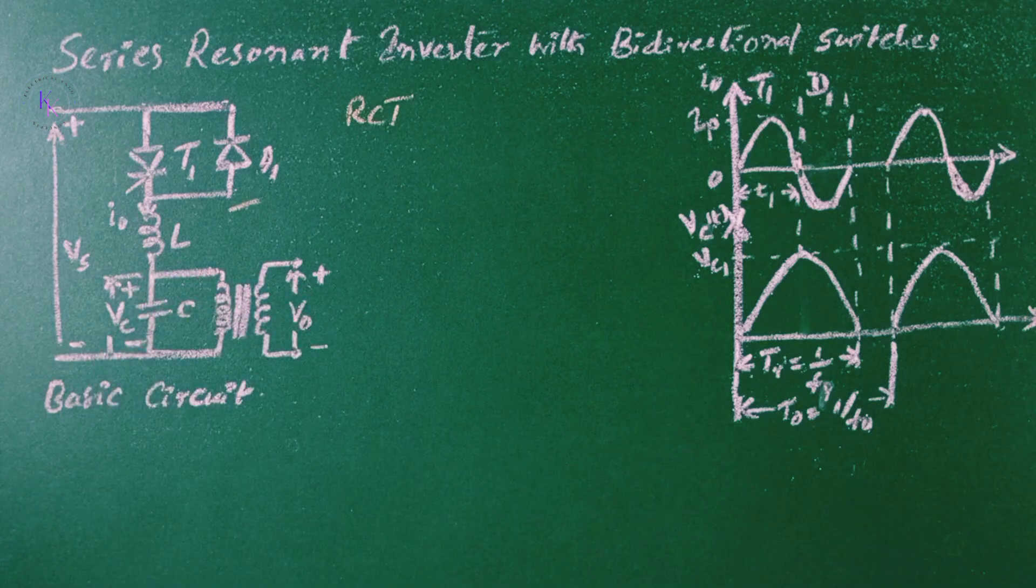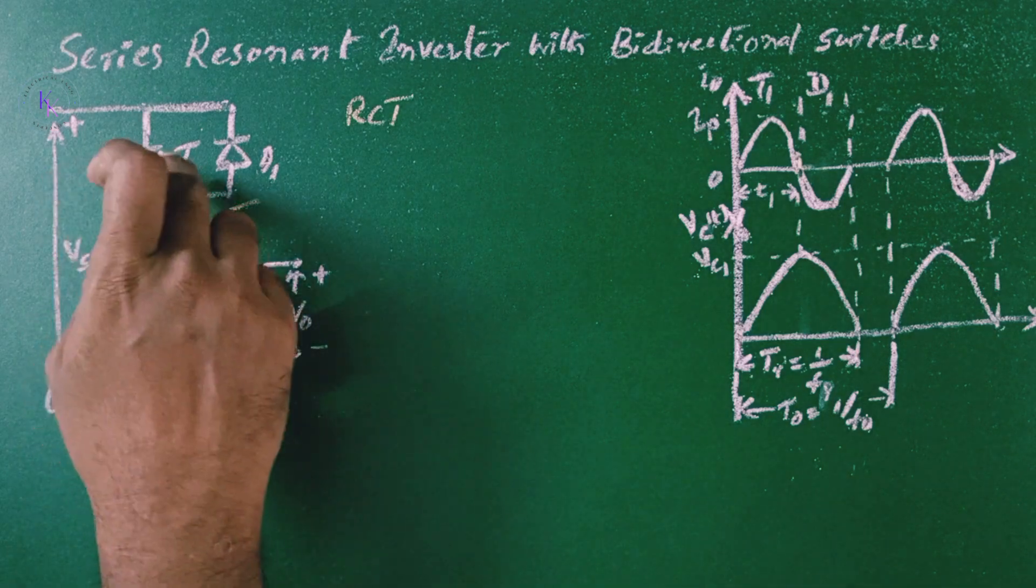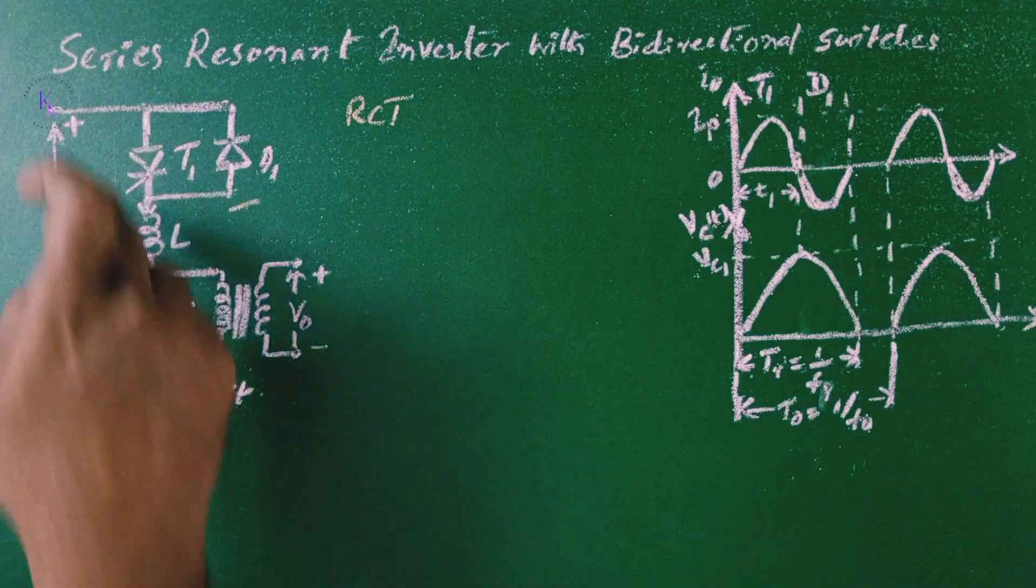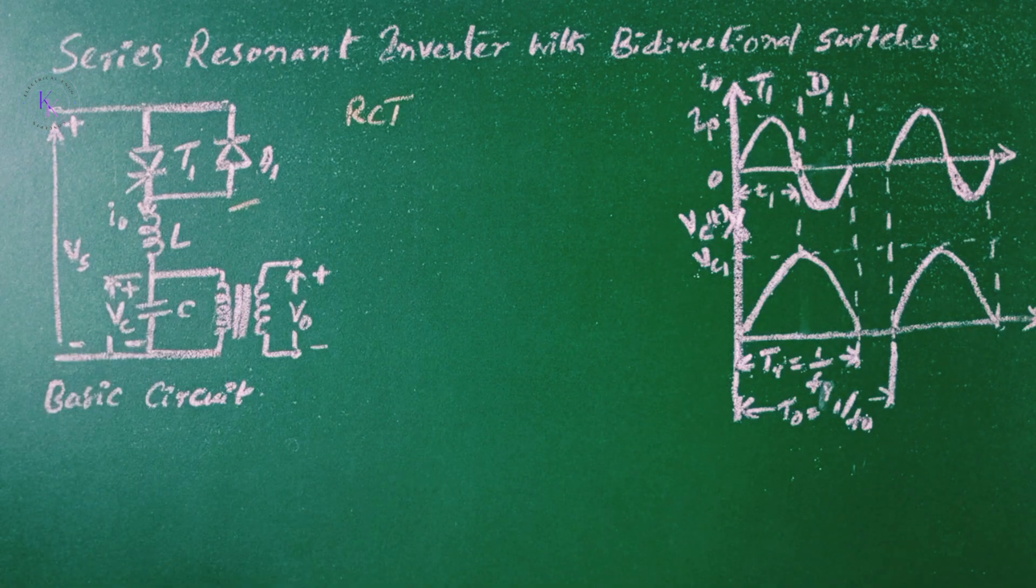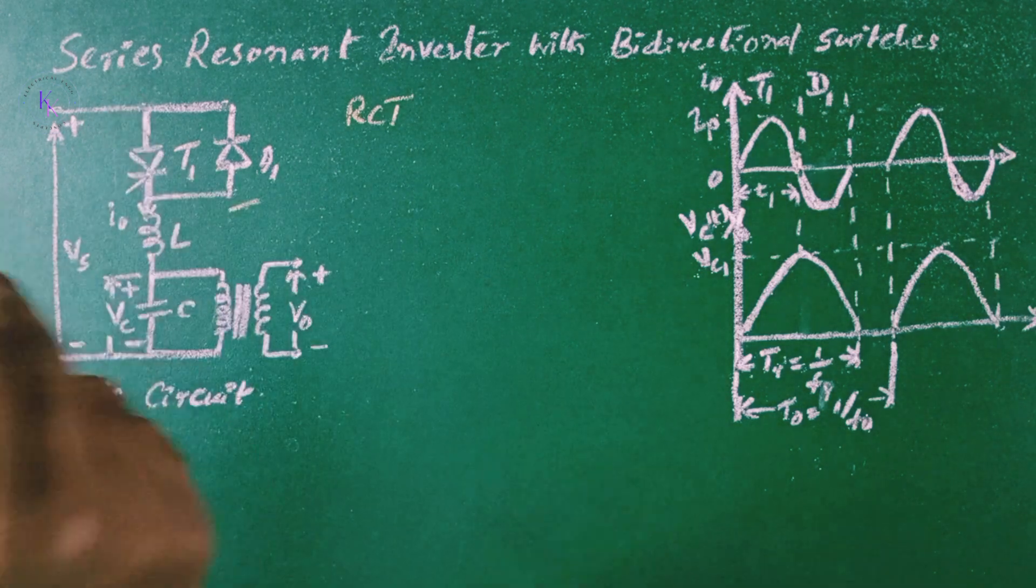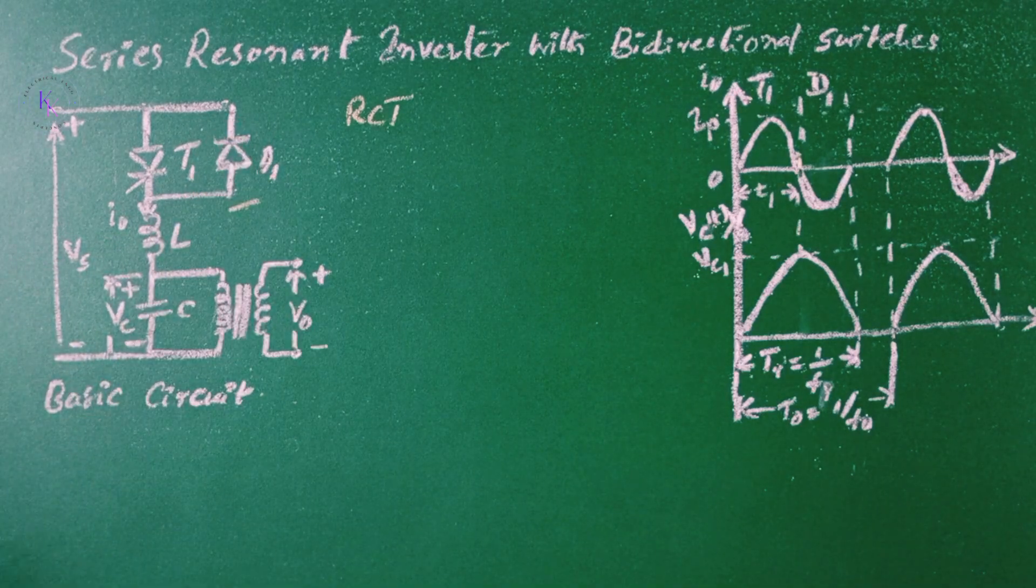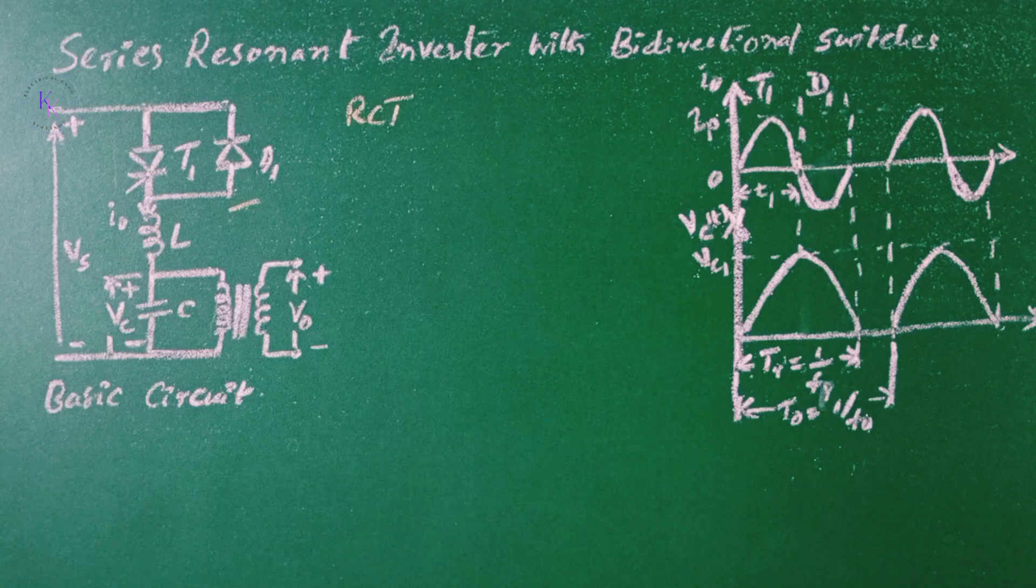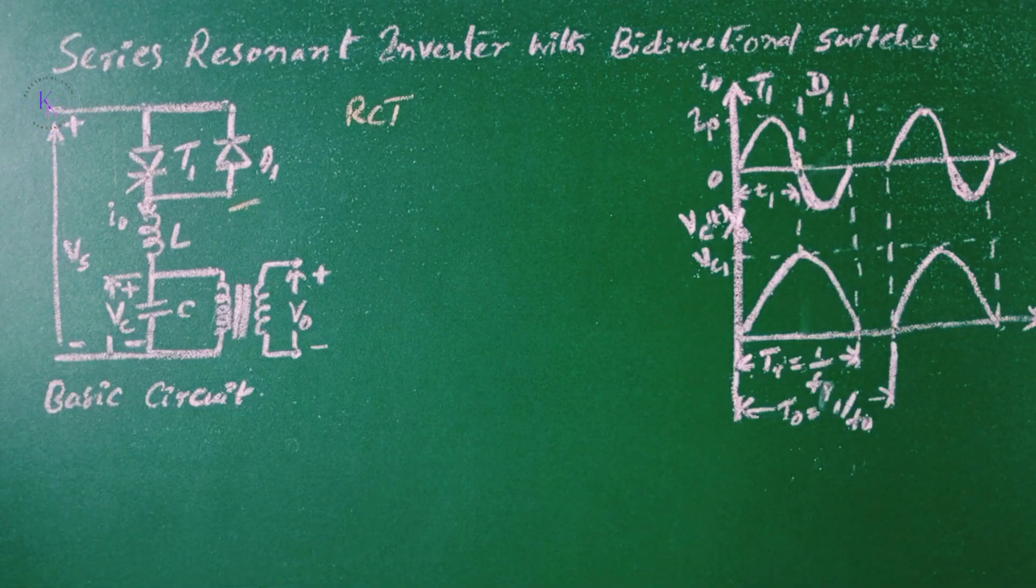Meanwhile, the capacitor C is going to charge up. When this voltage, cathode voltage of the thyristor T1, becomes more than the anode voltage, then the thyristor is going to stop by self-commutation. Even though thyristor T1 is stopped by self-commutation, the diode D1 provides the path to carry the current from the load to the source. That is why the current path we are getting is negative when the D1 is on.